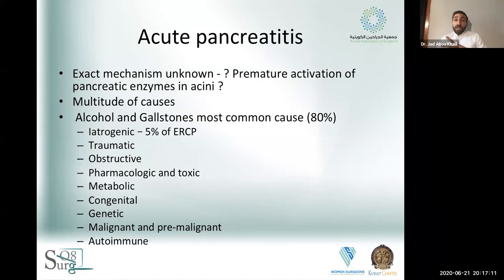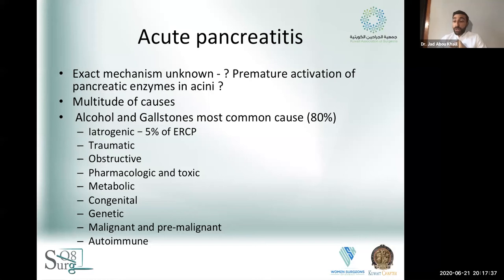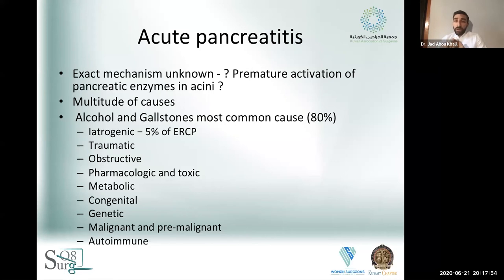Let's talk about acute pancreatitis. The exact mechanism is unknown, but we think it has something to do with premature activation of pancreatic enzymes within the acini, arising due to a variety of causes. Globally, and certainly in North America, alcohol and gallstones are the most common causes of acute pancreatitis, accounting for about 80% of cases. The next most common cause, depending on locale, is either iatrogenic or traumatic.